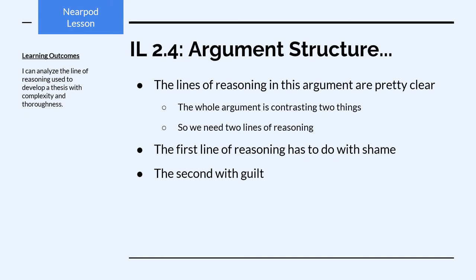So the first box in our argument map would be: 'The use of public shame as punishment for nonviolent crimes is misguided.' That sounds like a good primary claim to work with. In the first text we read about felon voting, the lines of reasoning weren't immediately clear — we had to map them out to discover four lines of reasoning. That particular essay wasn't as cleanly organized as this one. In this essay the lines of reasoning are very clear — the whole argument from paragraphs 4 through 12 contrasts two things: two emotions. We need to look for the two different lines of reasoning that make up that contrast.